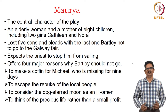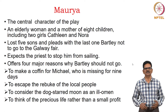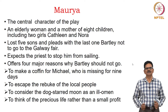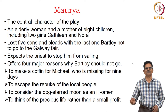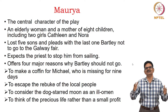Maurya is the protagonist, the central character of the play. She is an elderly woman and a mother of eight children, including two girls, Kathleen and Nora. She has already lost five sons and pleads with the last surviving one, Bartley, not to go to the Galway fair because she knows the weather is not good for Bartley to travel. She expects the young priest to stop him from sailing.